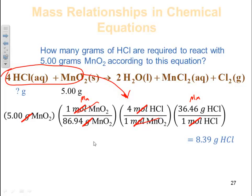So if I have 8.39 grams of HCl and 5.0 grams of manganese 4 oxide, there will be none of those reactants left and only products, because I will consume both my reactants.